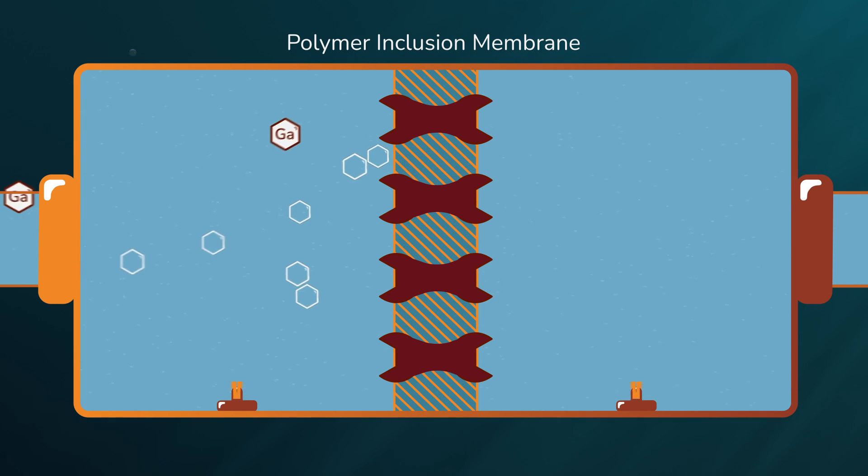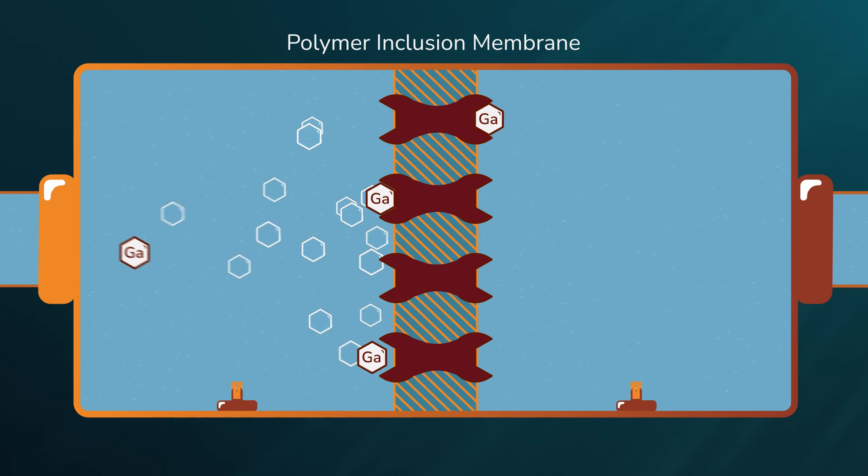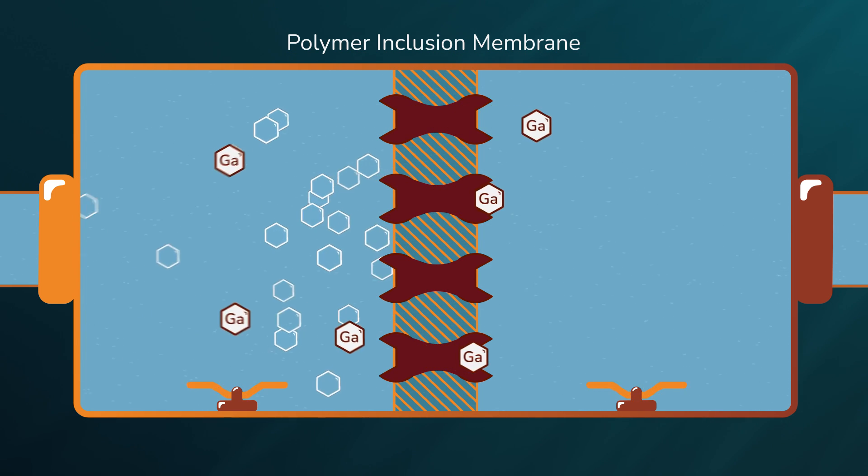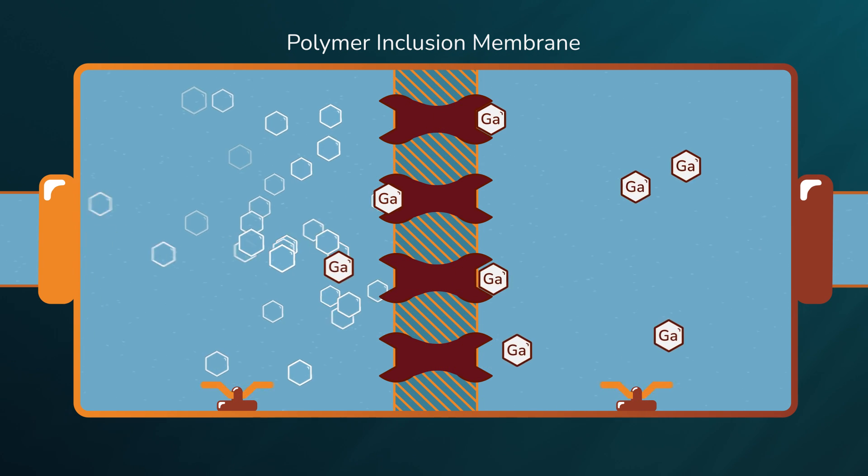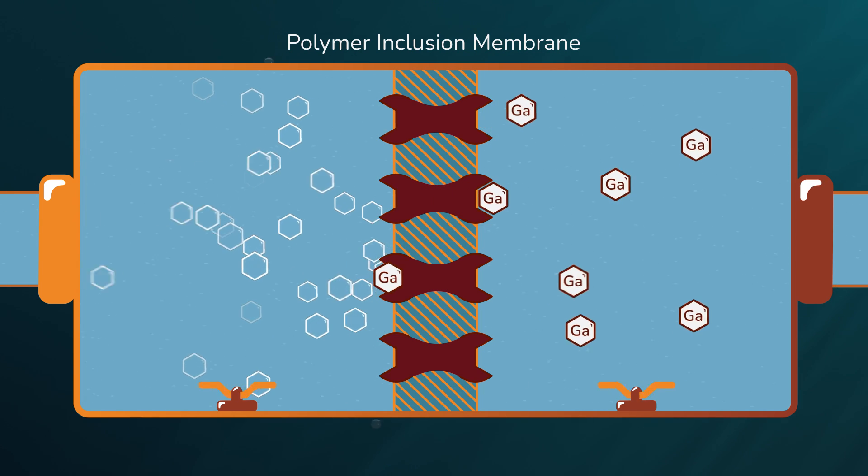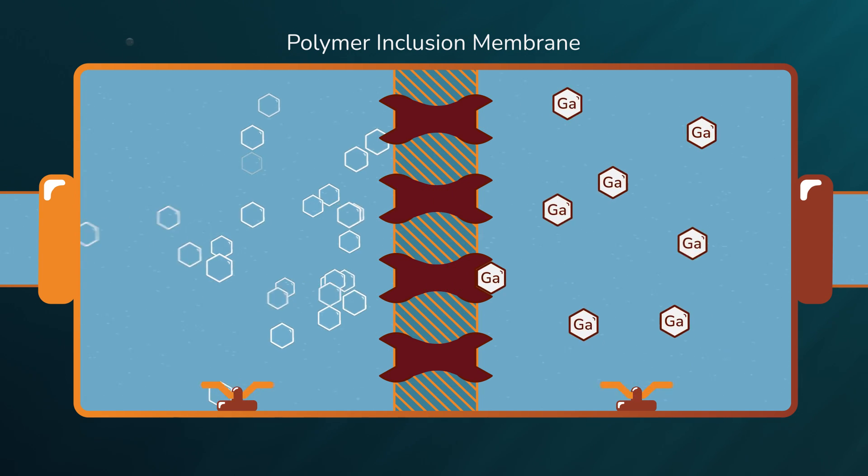Therefore, on one side of the membrane we have the brine containing the gallium, and on the other side of the membrane we have an aqueous phase. Due to the difference in concentration between the two sides of the membranes, this gallium moves from the brine to this aqueous phase by diffusion. In this way we obtain an aqueous solution containing gallium, so that it can be recovered with a high purity.